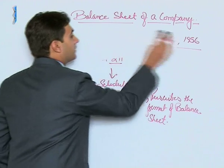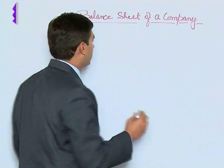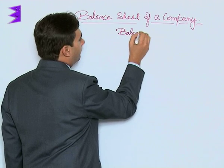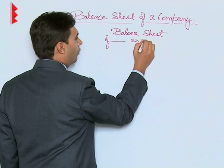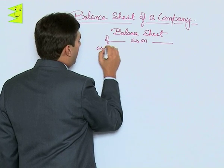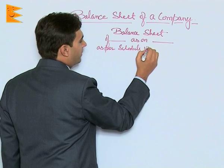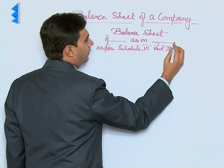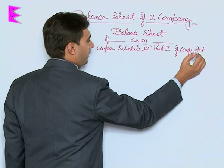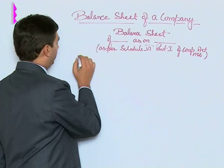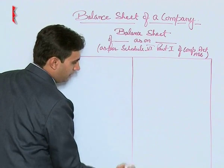Coming to the format of the balance sheet as in Schedule Six Part One, the format of the balance sheet remains the same in accounting terms — we have assets and we have liabilities. On the top it is written as 'Balance Sheet of the Company as on date as per Schedule Six Part One of Companies Act 1956,' and then we have the asset side and the liability side.